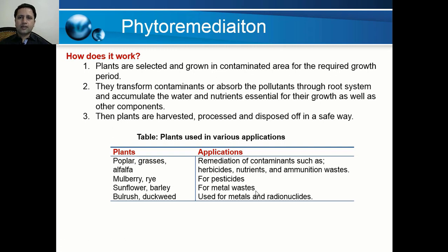Plants are selected and grown in a contaminated area for a required growth period. These plants transform or absorb pollutants through their root system and accumulate water and nutrients essential for growth, as well as other components. Then the plants are harvested, processed, and disposed of safely.